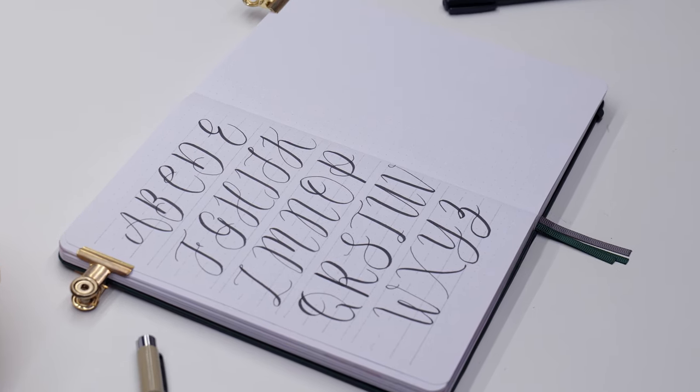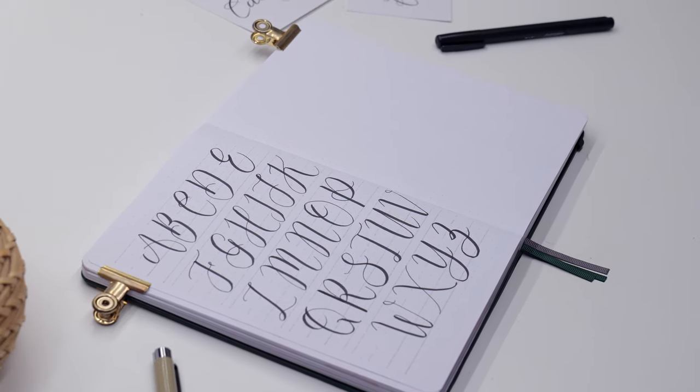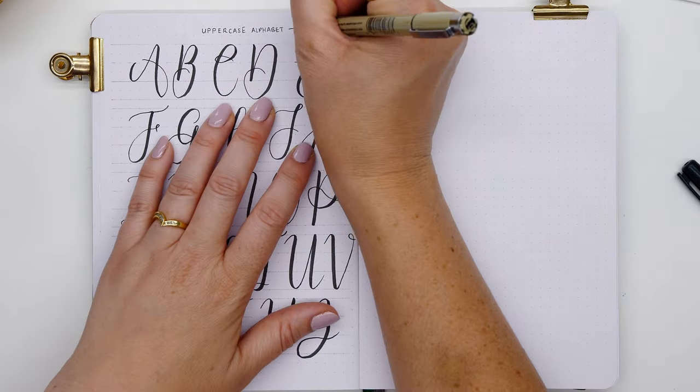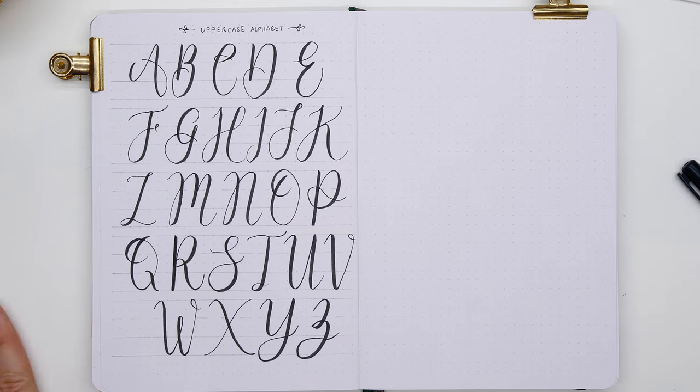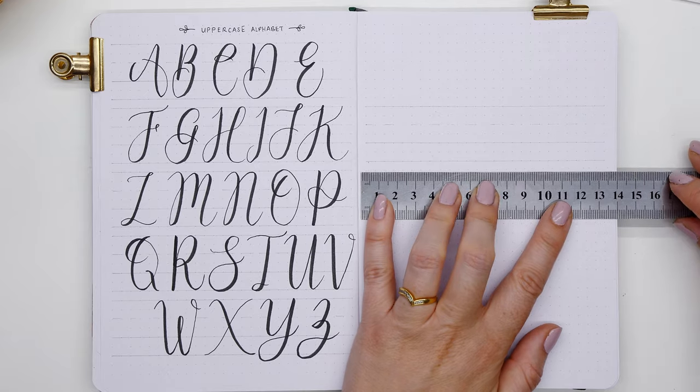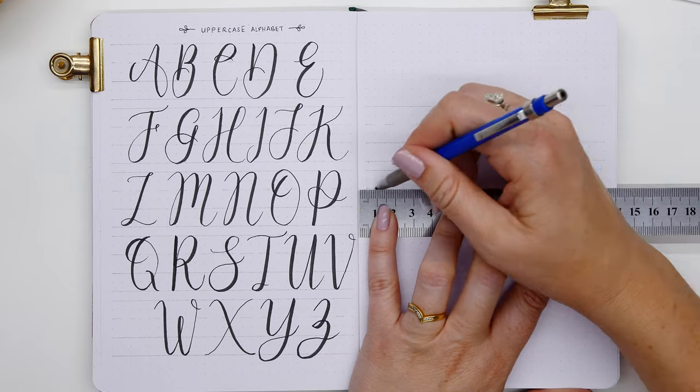That is our uppercase alphabet done, and now we can use that as a reference in our journal to turn back to when we just want to have our standard calligraphy style font. I love to vary up my handwriting throughout my journal, so to have this there as a reference it'll give me a quick reminder of my go-to style.